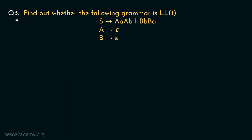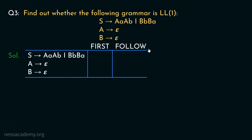Let's now move on to the next question: find out whether the following grammar is LL1. This grammar includes three different non-terminals. We begin by finding the firsts and follows. Starting from the last in the production rules: B can be rewritten as epsilon, so FIRST(B) includes epsilon. Similarly, A can also be rewritten as epsilon, so FIRST(A) includes epsilon as well.